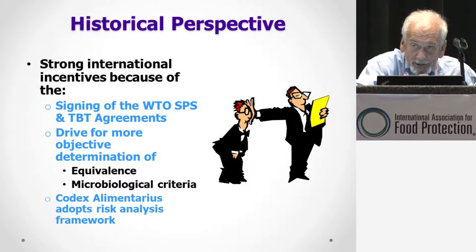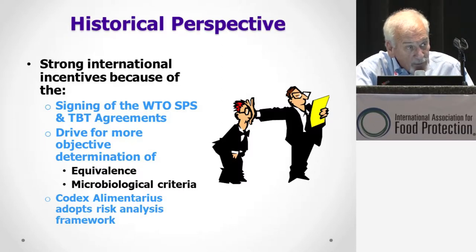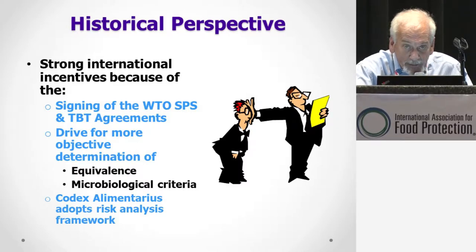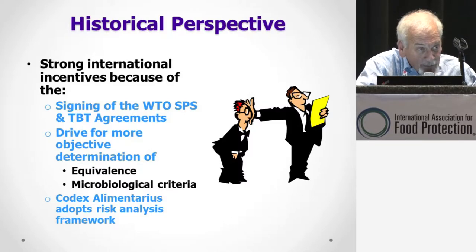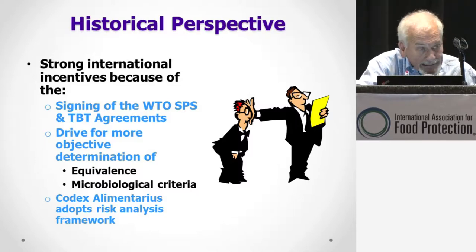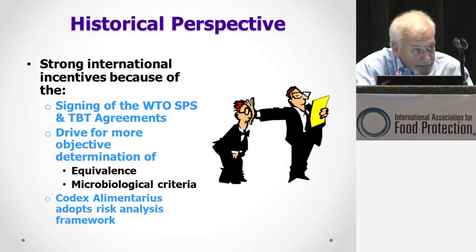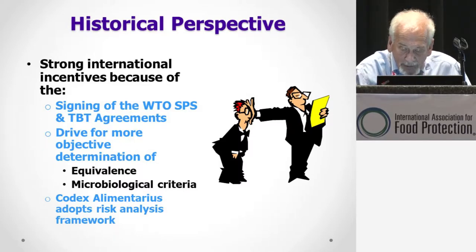We also had some really strong incentives. One of them in the United States was the 1994 Agricultural Department Reorganization Act, which for the first time demanded that we would do risk assessments for major regulations. We also saw at this time the signing of the WTO SPS and TBT agreements that basically said that you needed to do a risk assessment if there was a challenge in terms of food safety issues, particularly around equivalence and microbiological criteria.